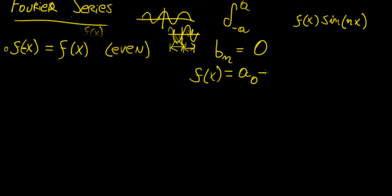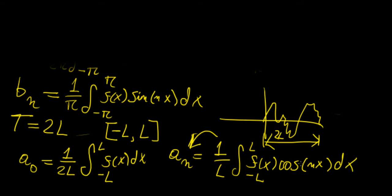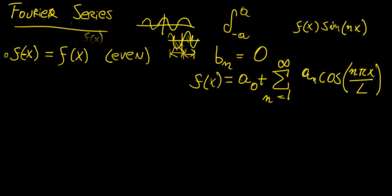This means that for an even function, the Fourier series simplifies to f(x) = a₀ + Σₙ₌₁^∞ aₙ cos(nπx/L). Note that when adjusting to a general period 2L, instead of having nx, you now have nπx/L. This is the adjustment we make for a general period 2L. Similarly, sin(nx) becomes sin(nπx/L). So this is the Fourier cosine series for an even function.